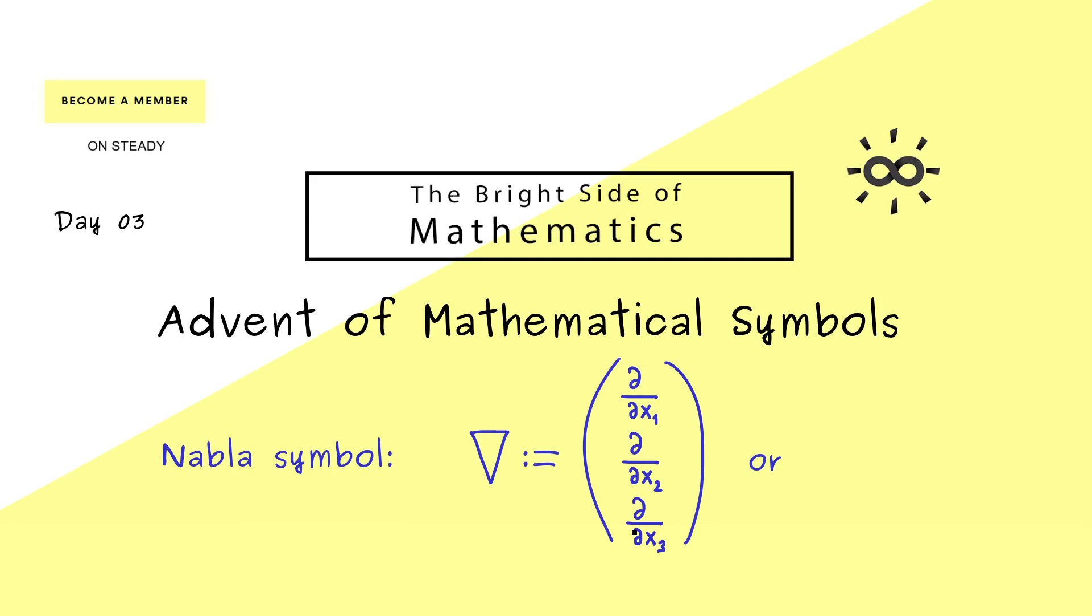So what you should see here is this is simply a short way to put all the partial derivatives with first order into one object. Then formally, you can calculate with this object we call nabla like it would be a normal vector.